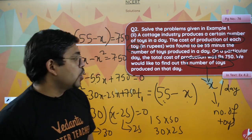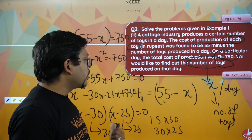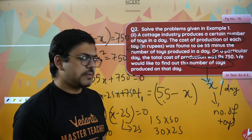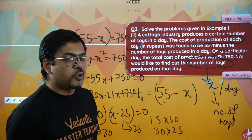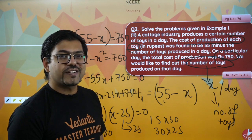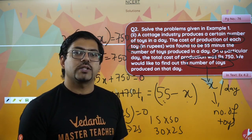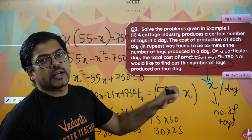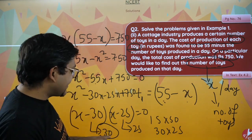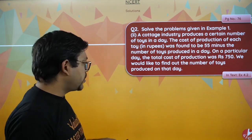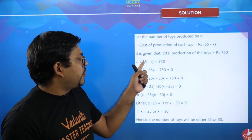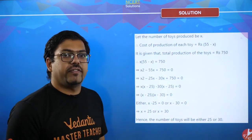The value of x — meaning the total number of toys produced in a day — is 30 or 25. So the answer is 30 toys or 25 toys. If 30 toys are produced, the cost per toy is 55 minus 30, which is 25 rupees. If 25 toys are produced, the cost per toy is 55 minus 25, which is 30 rupees. The answer is 30 or 25 — either can be correct. The equation was x into 55 minus x equals 750.